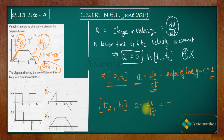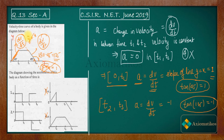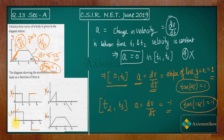So acceleration has to be negative between t2 and t3. In option 1, acceleration is still shown as positive in that region, so option 1 cannot be correct. Acceleration must be negative there, which is why the second option is true.